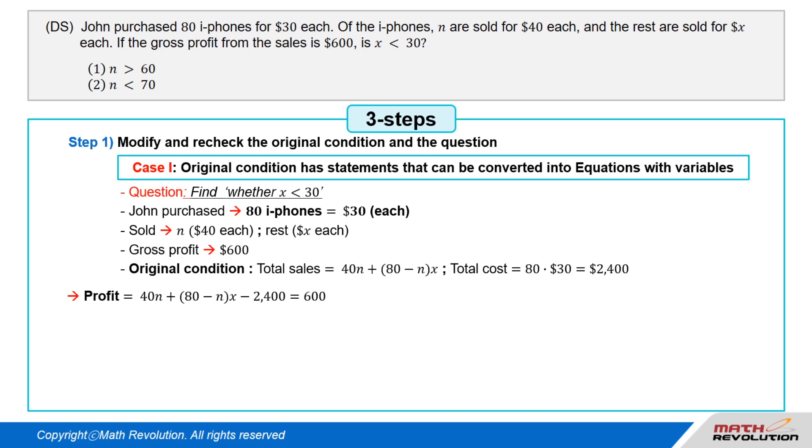So the equation for profit is 40N + (80 - N)X - 2,400 = 600. This can be rearranged to get (80 - N)X = 2,400 + 600 - 40N, or (80 - N)X = 3,000 - 40N. So, X = (3,000 - 40N)/(80 - N), and we are trying to determine if (3,000 - 40N)/(80 - N) is less than 30.